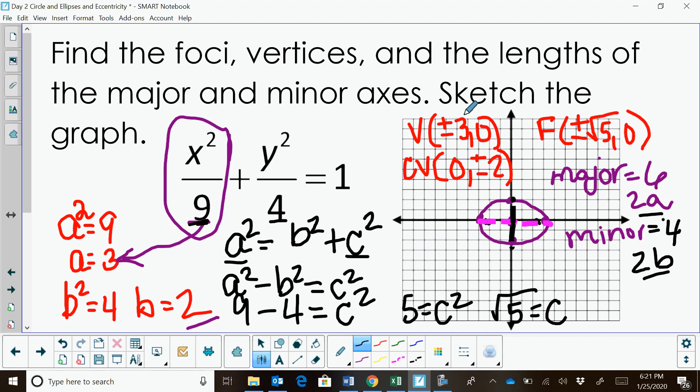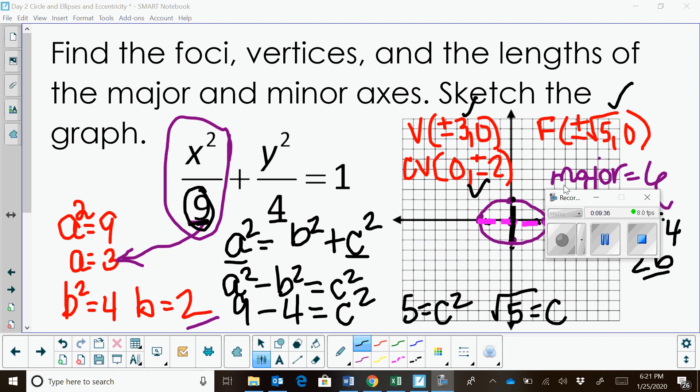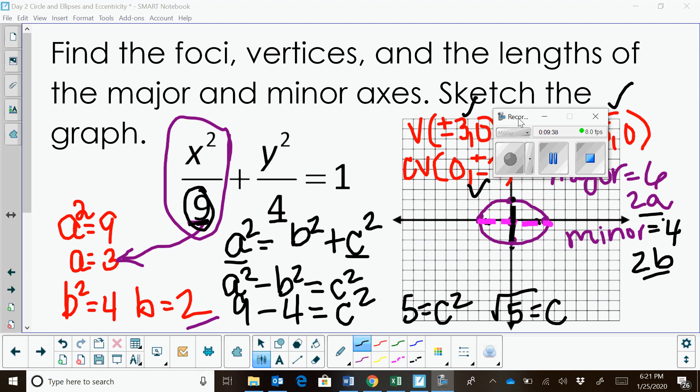So we have our vertices, our co-vertices, our position of our focus, the major and minor axis, and we have a sketch. That's how you graph an ellipse that has a center at the origin, and it has an A value that comes first under your X squared. There'll be a couple more videos explaining a little bit more about ellipses. I hope this video was helpful.